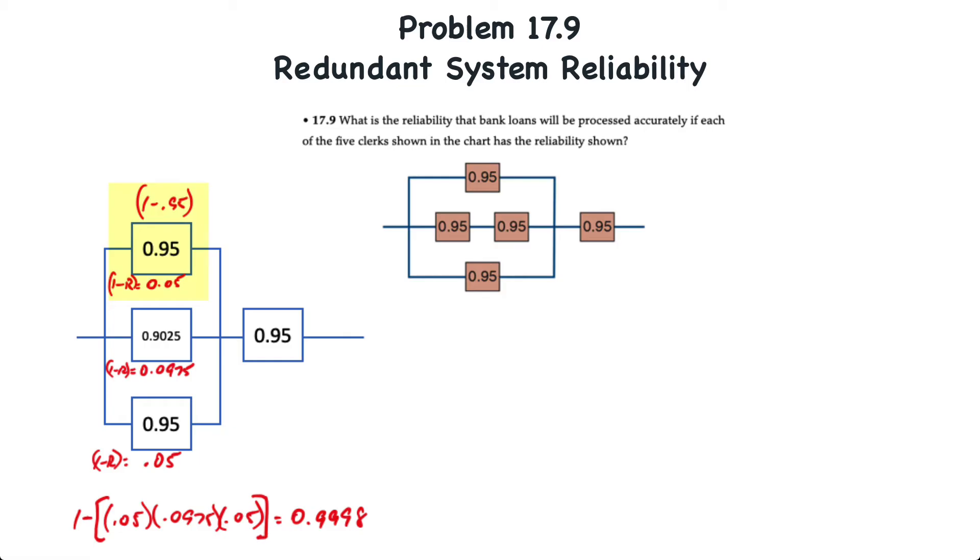So, for example, the top component or clerk at 95% reliability can be said to be 5% unreliable. The same thing for the clerk at the bottom of the box.